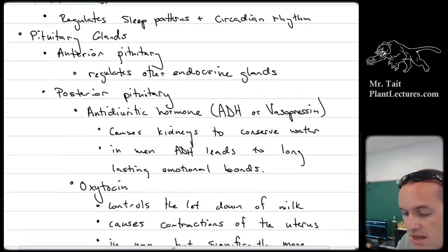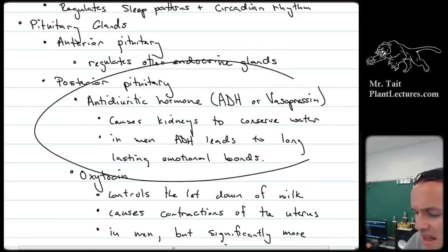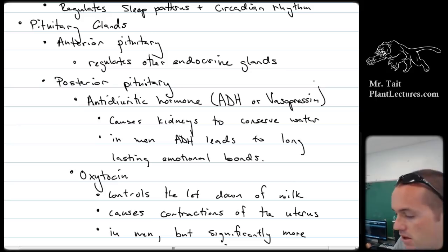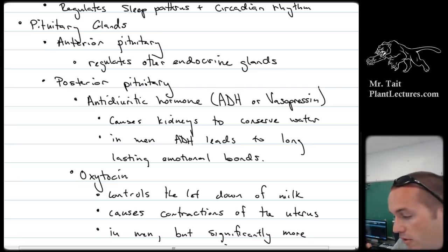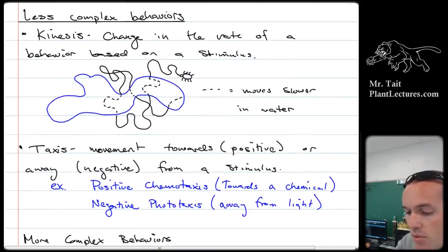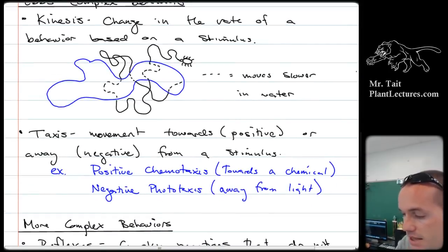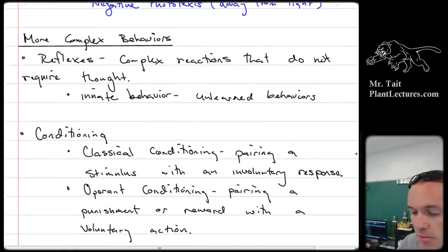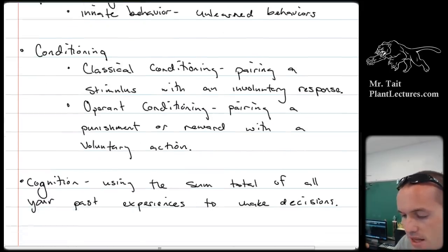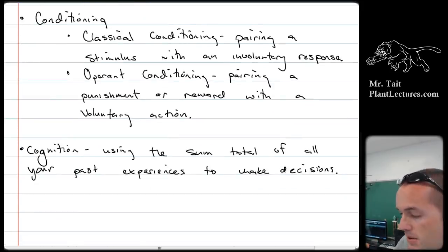We talked about the endocrine system. Based on the practice tests, the posterior pituitary gland and antidiuretic hormone seem to be important things they're focusing on. You should also know that the pancreas, insulin, and glucagon are very important. Animal behaviors — less complex behaviors include kinesis, which is a change in rate based on a stimulus, and taxis, which is movement towards or away from a stimulus. More complex behaviors include reflexes, which are encoded in the genetics. Conditioning and cognition are based on previous experiences.